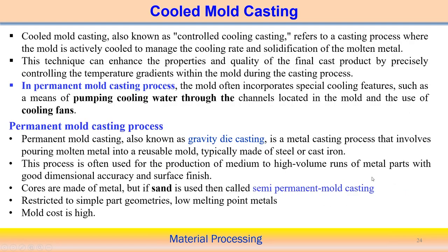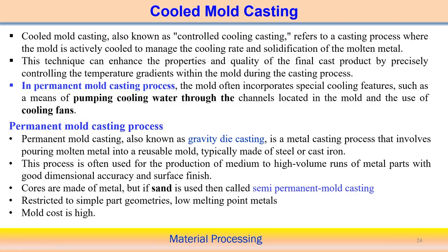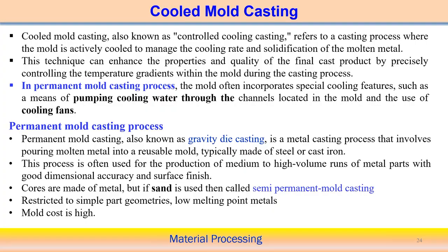Another process is called the cooled mold casting process — also referred to as control cooling casting. Here the mold is actively cooled to manage the cooling rate and solidification of the molten metal. We know that the structure of a cast component depends on the rate of cooling. By controlling the cooling rate, we indirectly influence the solidification behavior, and can modify the microstructure during the casting operation.